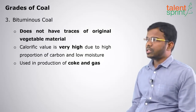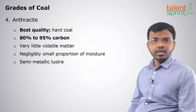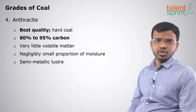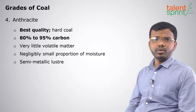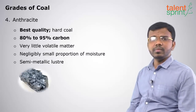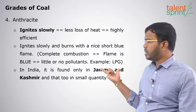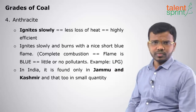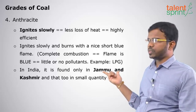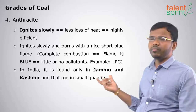The fourth and highest grade is anthracite. It has the best quality of coal with 80 to 95 percent carbon content and very less moisture compared to peat, lignite, and bituminous coal. It has a semi-metallic luster and appears somewhat glowing. Anthracite ignites slowly, gives very high heat, is highly efficient, produces very less smoke and very less pollutants. In India, it is generally found in Jammu and Kashmir in very small quantities.